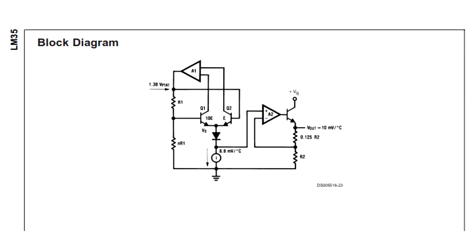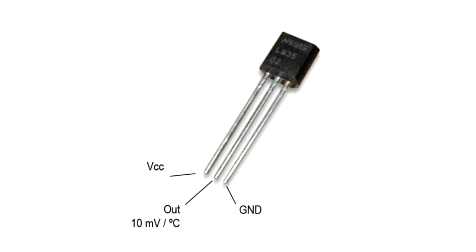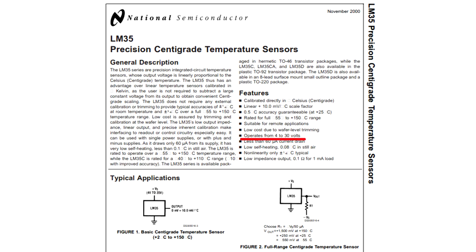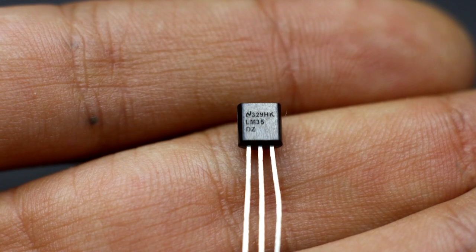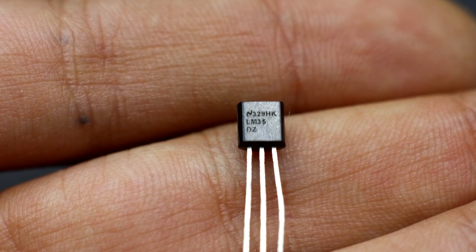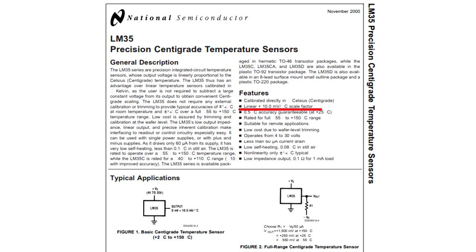This integrated circuit has the simplest connection, just power pins and output. The range of supply voltages is from 4 to 30 volts.